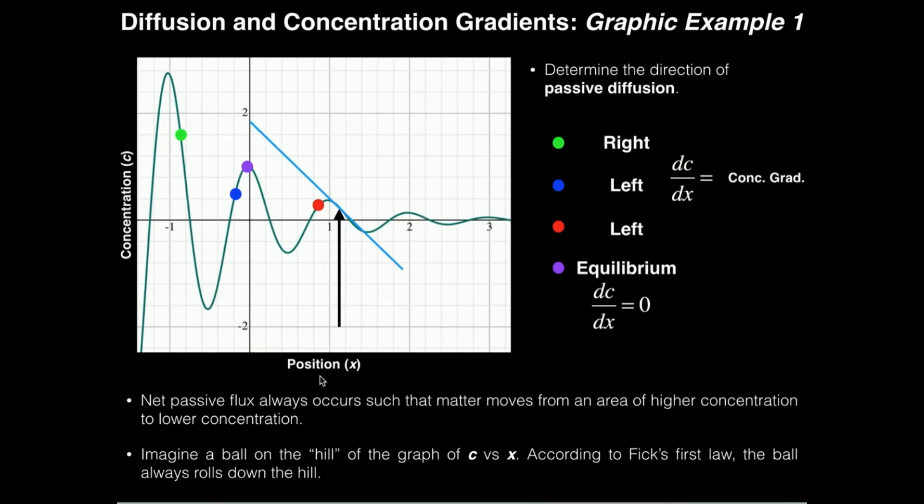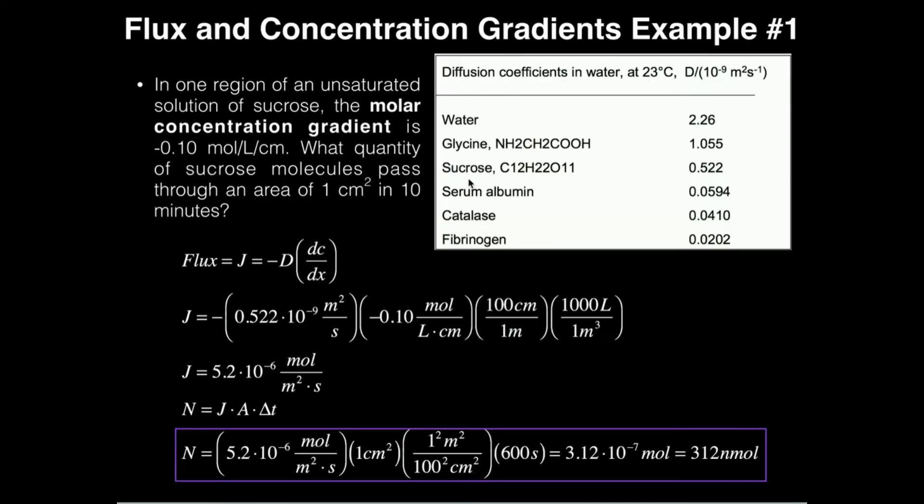It really just says in layman's terms that molecules always diffuse or net flux occurs from an area of high concentration to low concentration. So in the previous example when we dealt with sucrose, if I have one area that has high sucrose concentration and another area that has low sucrose concentration, the net flux will occur from the area of high concentration of sucrose to low concentration of sucrose.